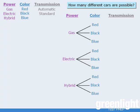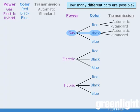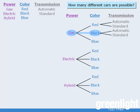Now, if we choose to have a gas-powered car that is red, then we have two options for the transmission. Similarly, if we choose to have a gas-powered car that is black, we have two options for the transmission. This process continues until we have accomplished all three stages.